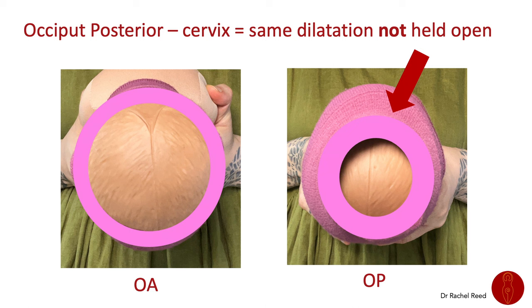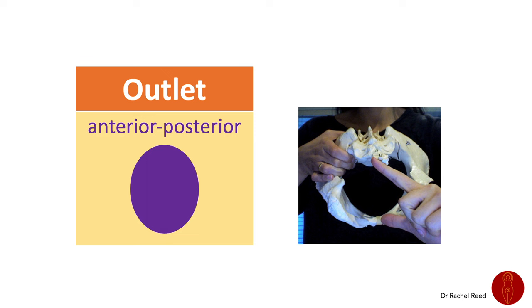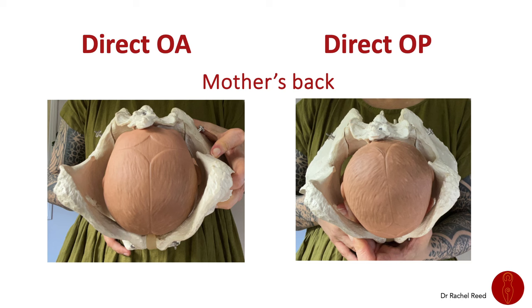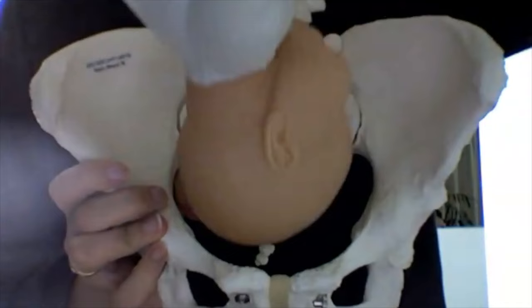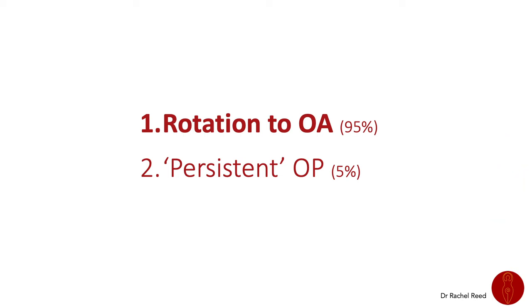In the case of an OP baby, they are likely to be higher up in the pelvis and not providing a neat round occiput to hold the cervix open in a circle. Instead, the cervix will appear to be closed and not opening. However, the fundus is still transforming away out of sight and out of touch. Labor is progressing; the cervix is waiting for the baby's head to move into it and hold it open. The outlet of the pelvis is wide in the anterior-posterior diameter, so the baby will move through this part of the pelvis in a direct OA or OP position.